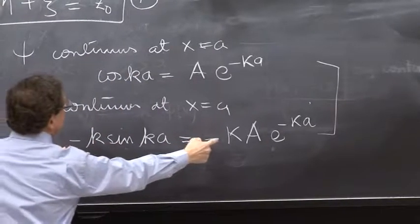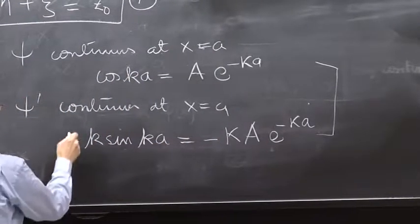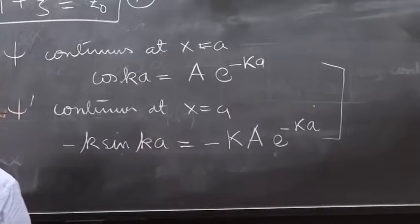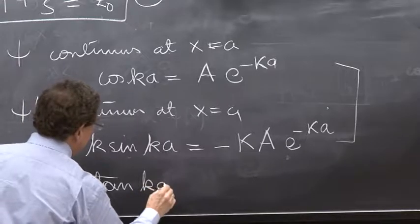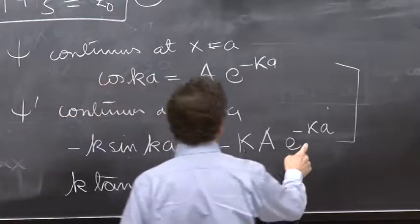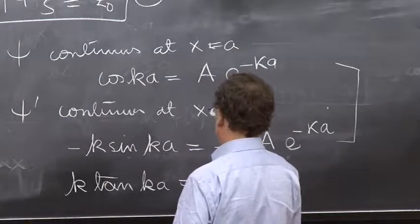Minus k and a minus. The minuses cancel. We can cancel those minuses. And you get k tan ka is equal to minus κ.